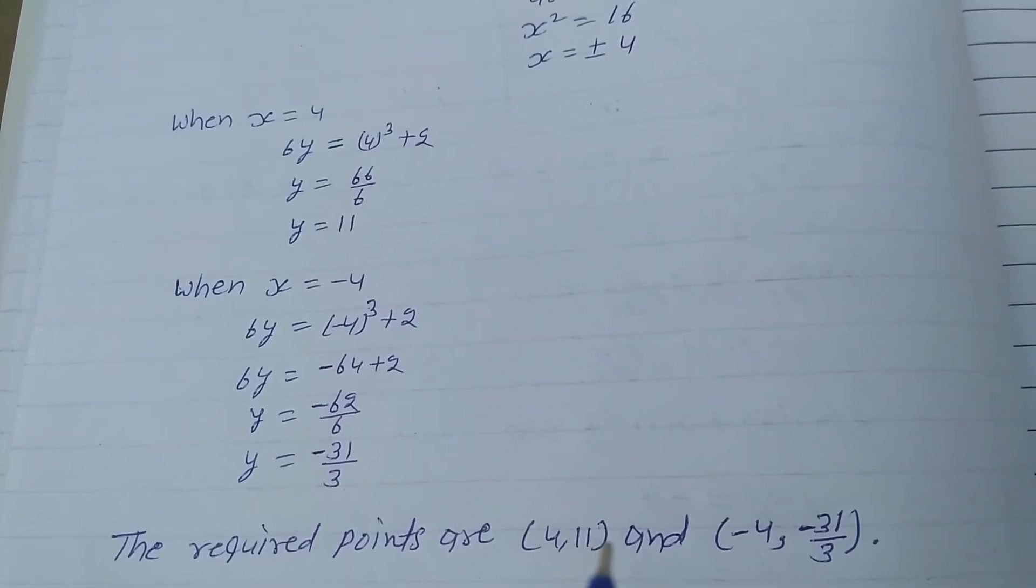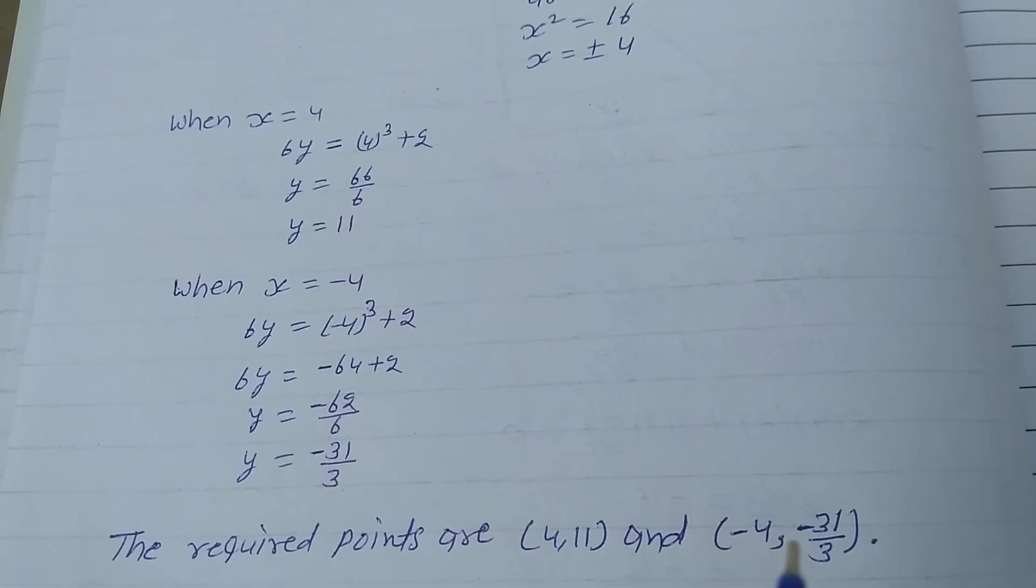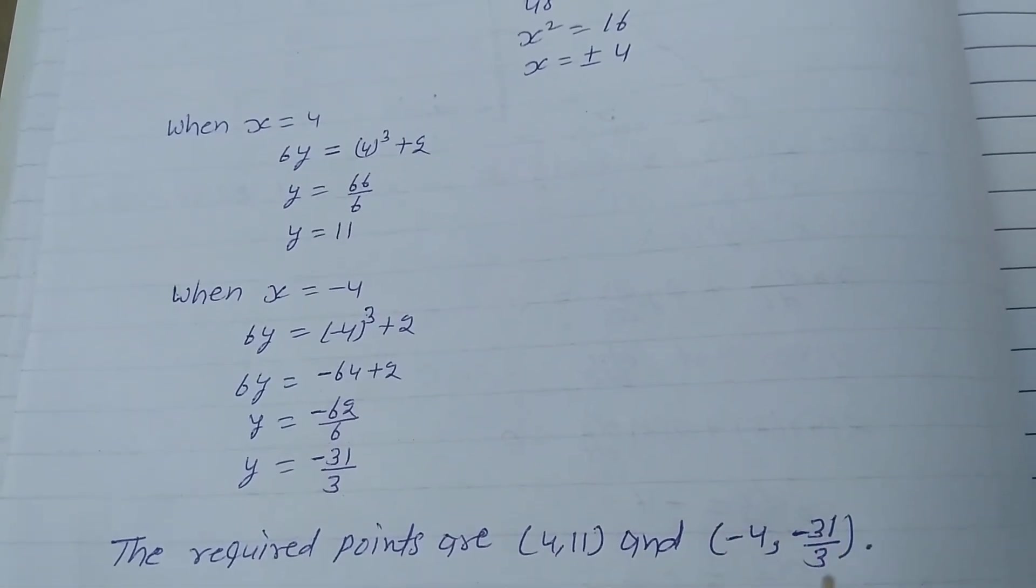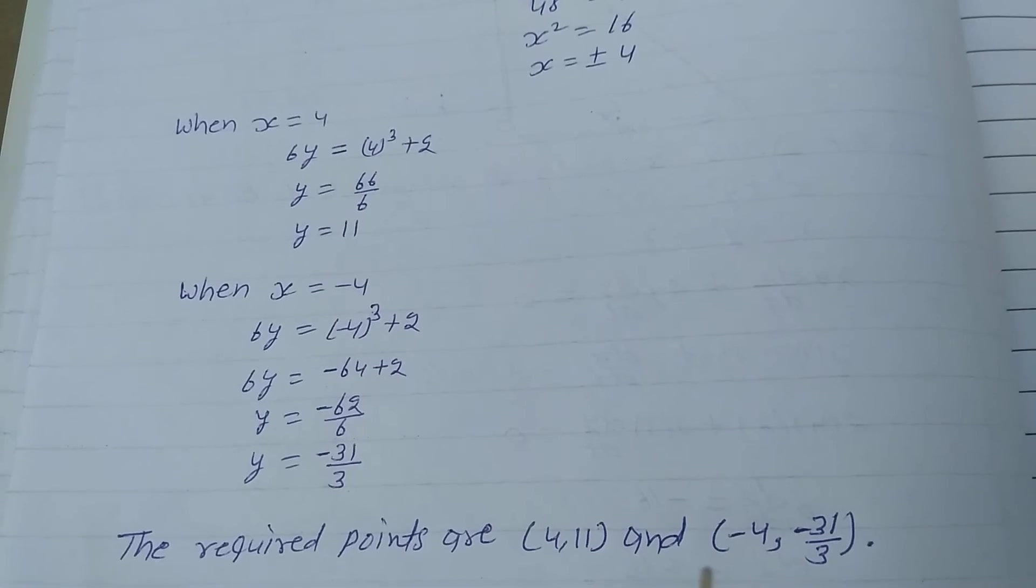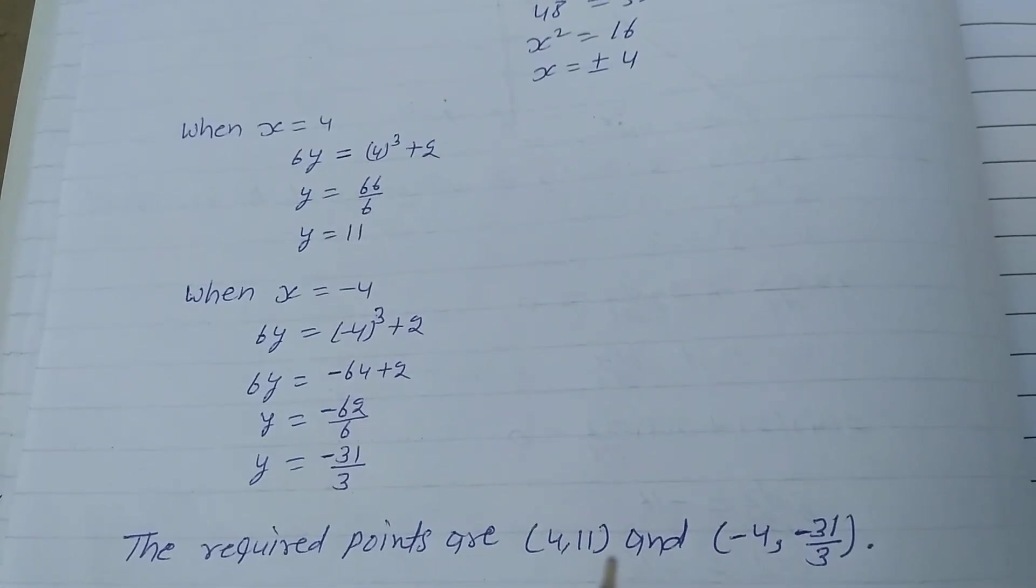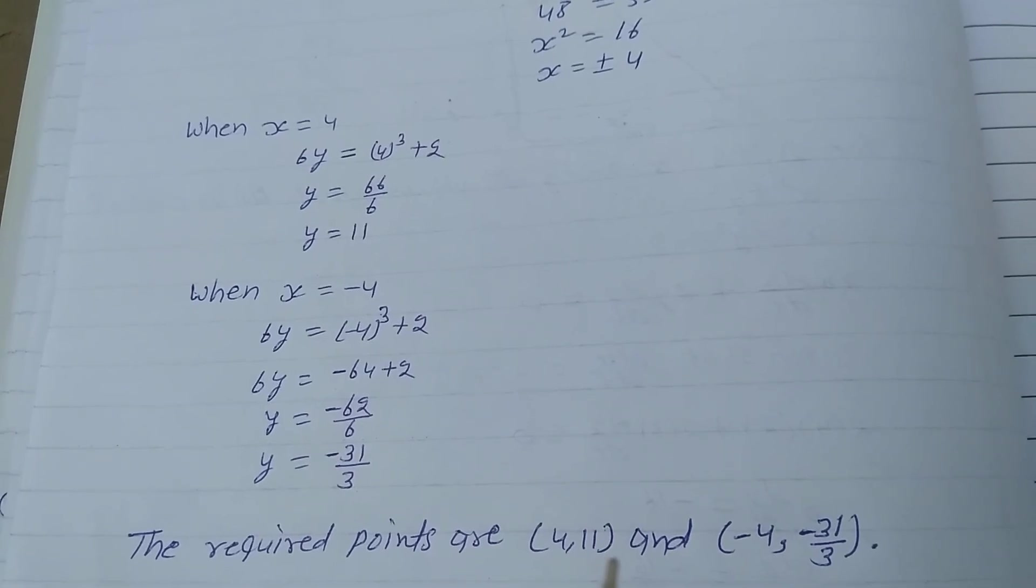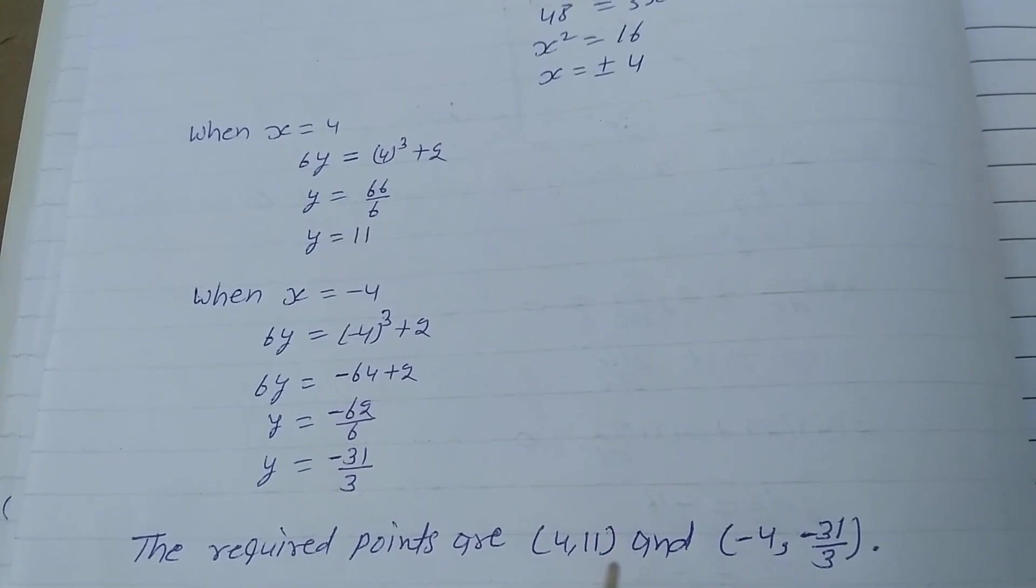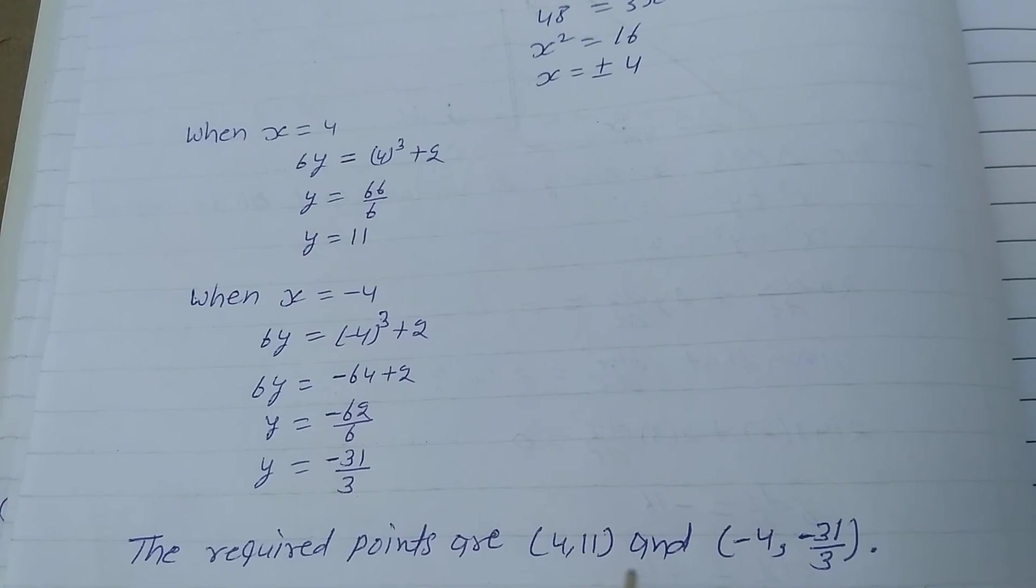The required points are (4, 11) and (-4, -31/3). These two points are the points on the curve where the y-coordinate rate is 8 times the x-coordinate changing rate. That is the solution of the question.